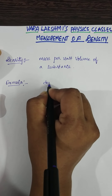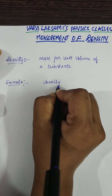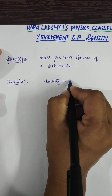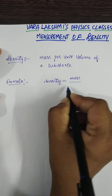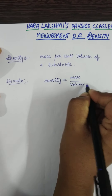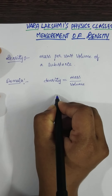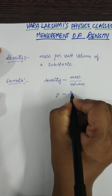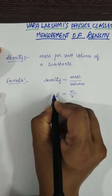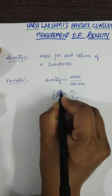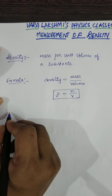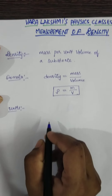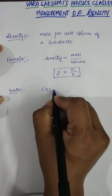The formula for density is: density is equal to mass per unit volume of a substance. Density is denoted with the symbol rho (ρ), which is equal to mass (m) divided by volume (V). So this is the formula for density.